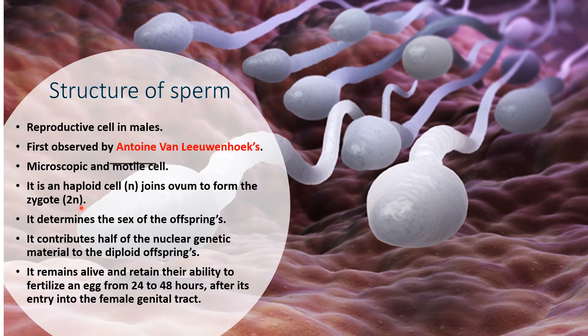The zygote develops into an embryo and then into the complete organism. Sperms determine the sex of the offspring in humans. There are two types of sperms produced: sperms containing Y chromosomes and sperms containing X chromosomes. If sperms containing X chromosomes fuse with the ovum, the offspring will be female. If Y-containing sperms fuse with the ovum, the offspring will be male. Sex determination depends on which type of sperm fuses with the ovum.